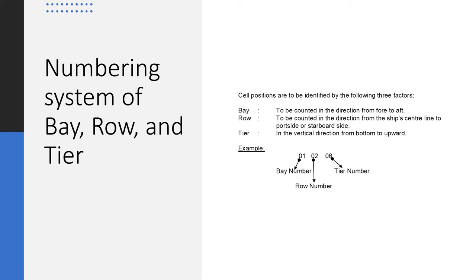The row is counted in the direction from the ship's centerline to the port side or starboard side. If there are two hatch covers on a ship, the space between them is considered row 0. On the starboard side you have odd-numbered rows like 1, 3, 5, 7, 9, and on the port side you have even-numbered rows like 2, 4, 6, 8. The tier runs in the vertical direction from bottom upward — the first container is the first tier, the second is the second tier, and so on.